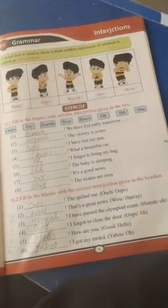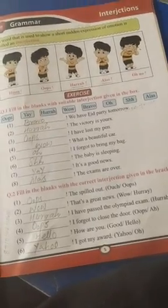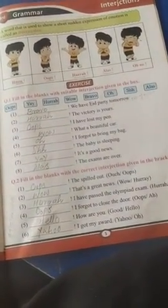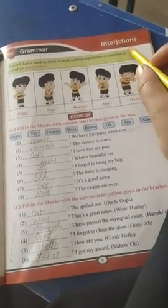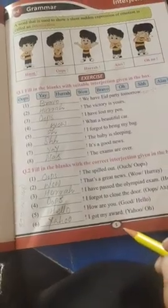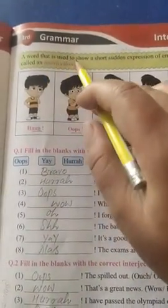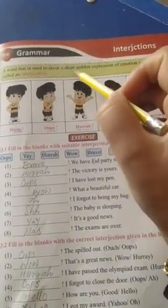Assalamu alaikum warahmatullahi wabarakatuh dear students, how are you all? Hope you are all fine and well, alhamdulillah. Today I am going to start the grammar question of book number six, that is interjections at page number five. What is an interjection? A word that is used to show a short sudden expression of emotion is called an interjection.